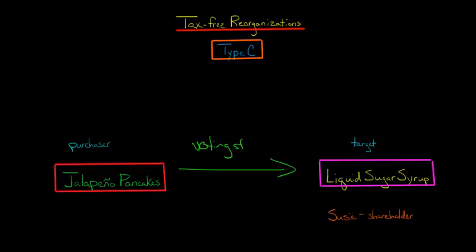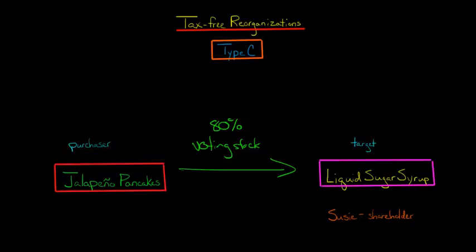How much boot? It has to be at least 80% of the consideration being voting stock, so the other 20% could be cash or something like that. However, there's an exception: if they're assuming any liabilities — so let's say Jalapeno Pancakes is assuming liabilities from the target corporation — then the amount of consideration that can be boot, that 20%, is reduced dollar for dollar for each liability that they assume.